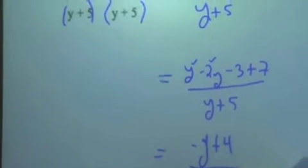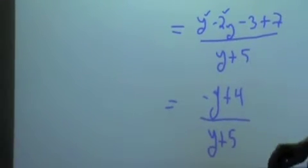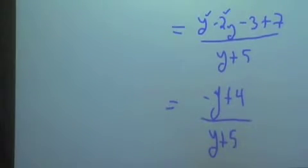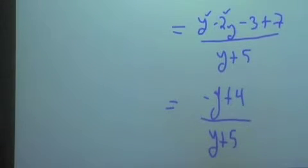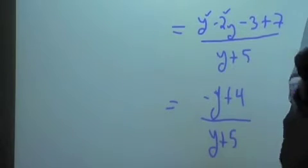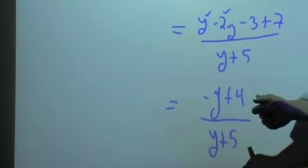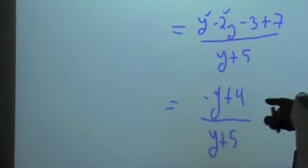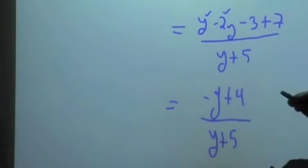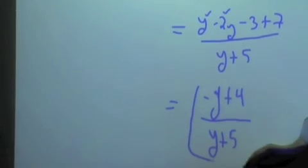What would we write there for the numerator, Kira? Y minus 2Y minus 3 plus 7. All over Y plus 5. We're almost done now. These are like terms. What's Y minus 2Y? It's negative Y. And negative 3 plus 7? Plus 4. So many people got Y plus 4 over Y plus 5. What happened to the negative? Little mistakes. People didn't rewrite it here. Just take your time. Rewrite things step by step. And you'll get it right every time.